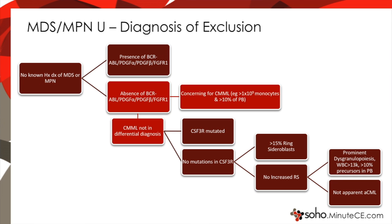MDS-MPN-U is probably more common than we think it is, but it remains a diagnosis of exclusion. If patients with MDS-MPN do not have a classic canonical rearrangement of BCR-ABL, PDGFR-alpha, or FGFR, if they lack monocytosis, if they lack CSF3R mutations, and if they do not appear to have the triumvirate of early precursors in the blood, white blood cell count greater than 13,000, and disproportional dysgranulopoiesis, then an MDS-MPN-U diagnosis should be considered.